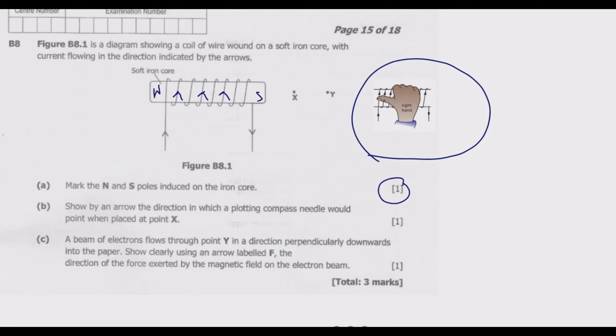Then show by an arrow the direction in which a plotting compass needle would point when placed at point X. Now when you have a magnet, this is north, this is south. Magnetic field moves from north to south.